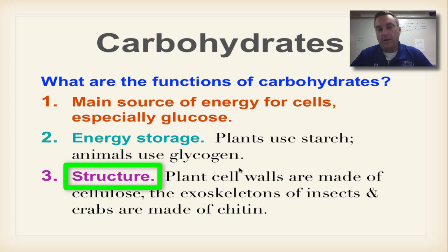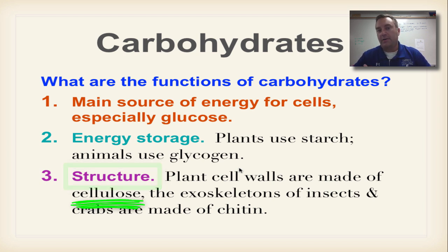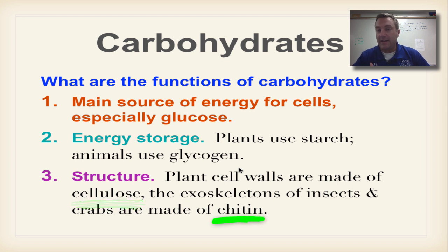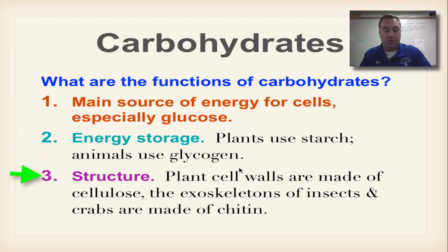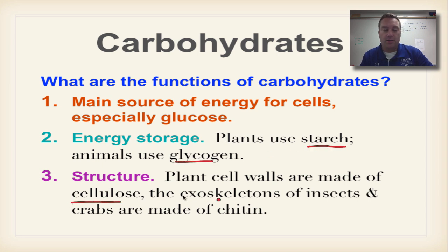The third function of a carbohydrate is structure and support. Plant cell walls are made out of a carbohydrate called cellulose — what paper and wood are made of. The exoskeleton of insects and crabs is made out of a carbohydrate called chitin. When you step on a bug and hear the crunch, that hard outer shell — the chitin — is what's breaking. So the three functions of carbohydrates are: primary energy source, energy storage, and structure. Make sure you know starch, glycogen, cellulose, and chitin.